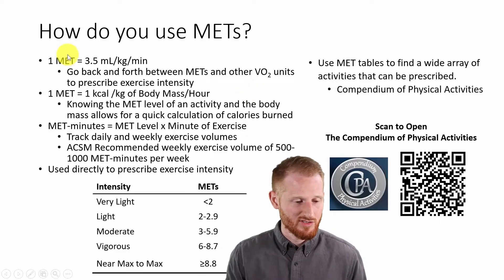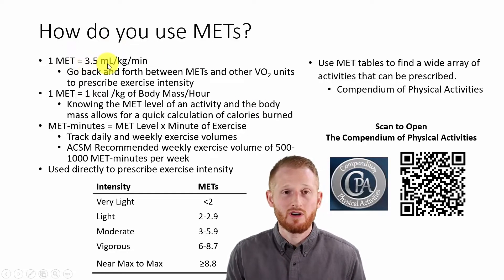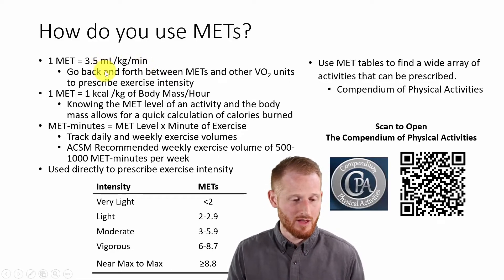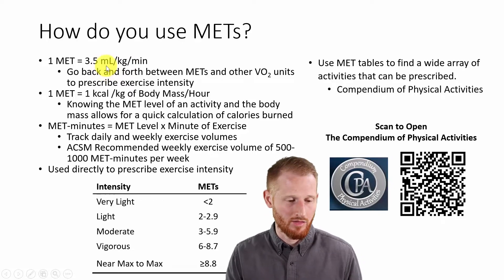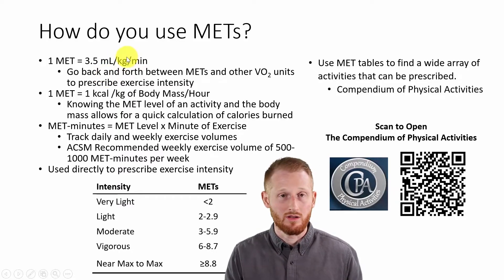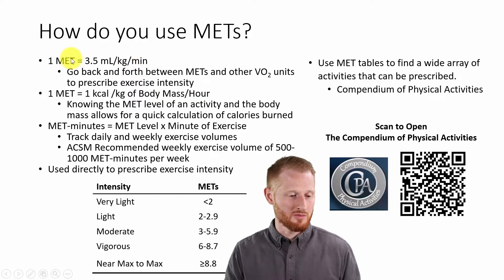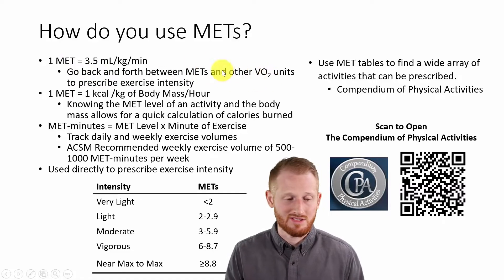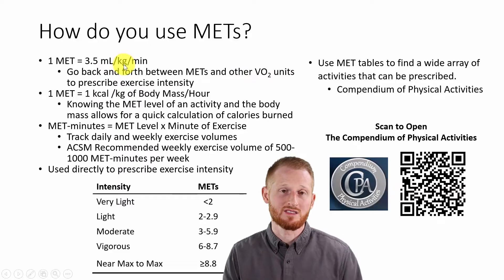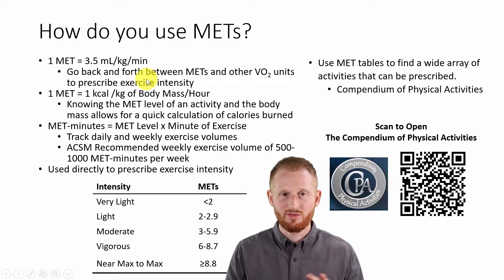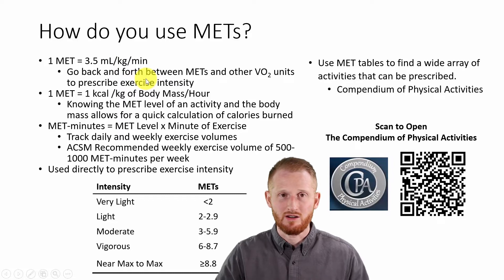How do you use METs? One MET equals 3.5 milliliters of oxygen used for aerobic metabolism per kilogram of body mass per minute of whatever activity you're talking about. At rest, most people are somewhere around 3.5 mL per kg per minute. These are VO2, or oxygen consumption units, and a MET is really a type of oxygen consumption unit. So you can go back and forth between METs and other VO2 units, whether it's mL per kg per minute, or if you have the body mass of the person, you can also get it to absolute VO2 units of liters per minute.